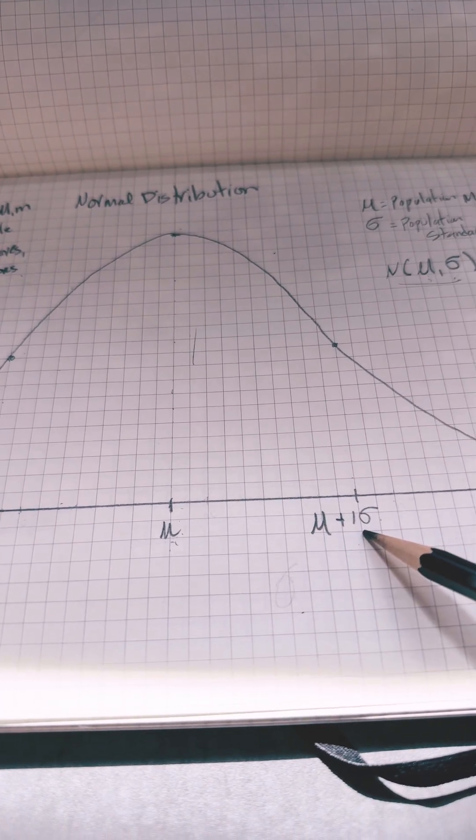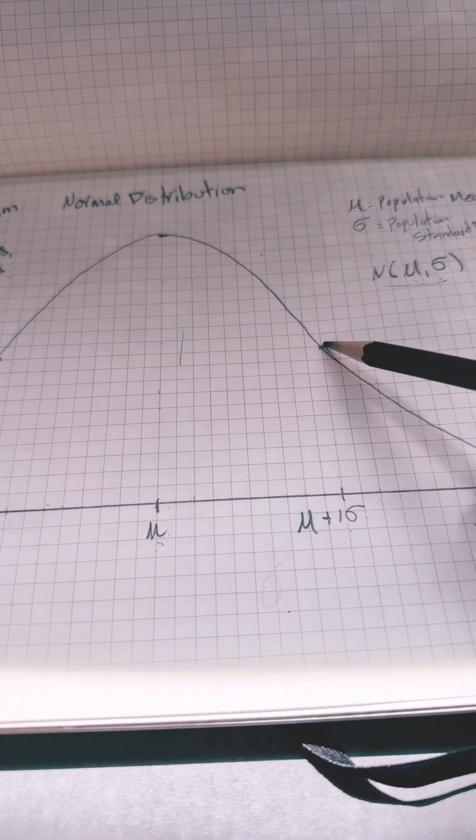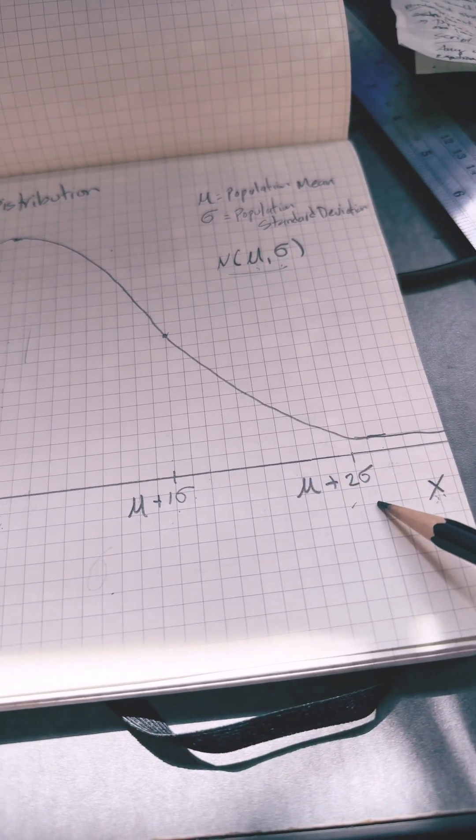It's separated by one standard deviation to the right, which is where the inflection point is, and then two standard deviations to the right.